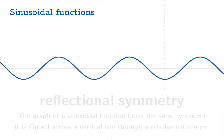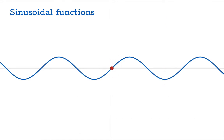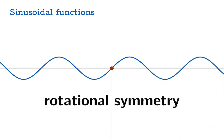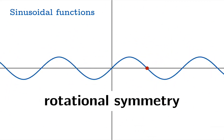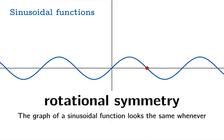But that's not all. A sinusoidal graph has rotational symmetry. You can pick various points around which you can rotate the graph 180 degrees. So the lesson here is the graph of a sinusoidal function looks the same whenever it's rotated 180 degrees about a baseline point.